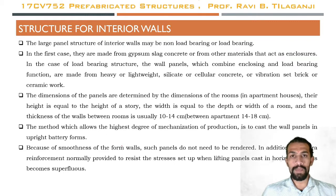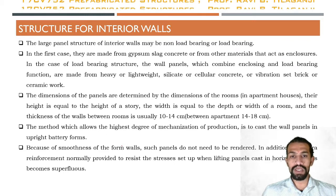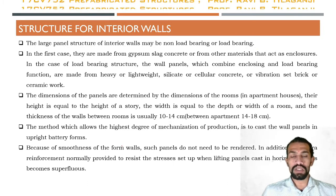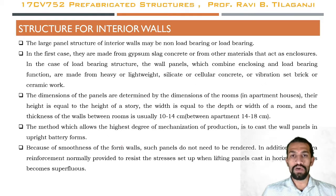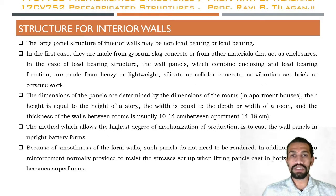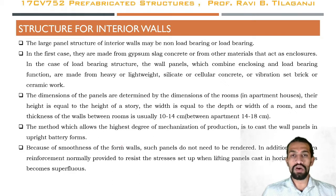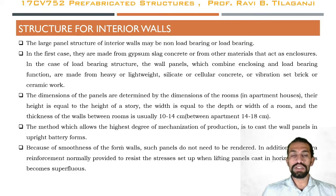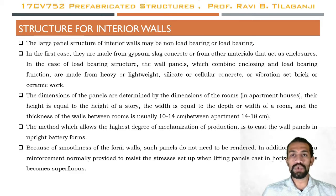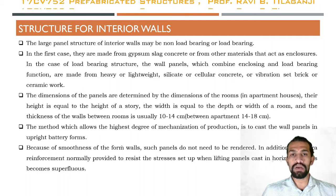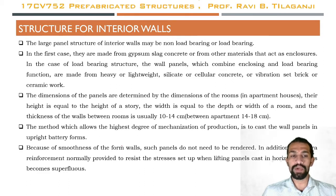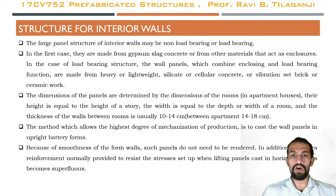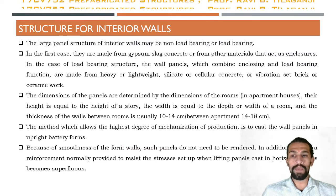The dimensions of the panels are determined by the dimensions of the rooms. In apartment houses, their height is equal to the height of one story, and the width is equal to the depth or width of a room. The wall thickness between rooms is usually 10 to 14 cm, and in apartments 14 to 18 cm.